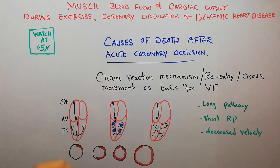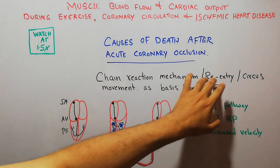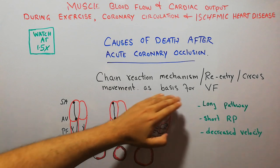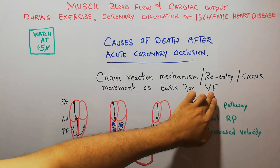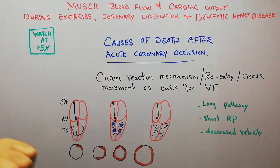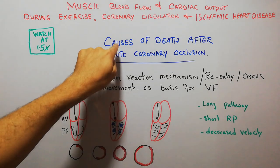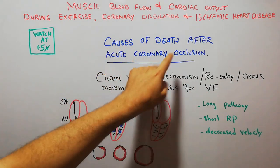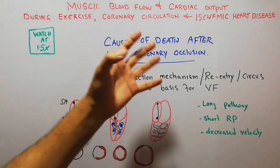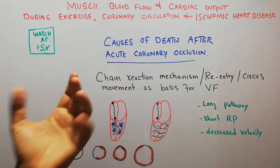Today we are going to discuss chain reaction mechanism, re-entry phenomena, and circus movement as a basis for ventricular fibrillation or VF. We have started our lectures about causes of death after acute coronary occlusion or causes of death after acute myocardial infarction or heart attack.